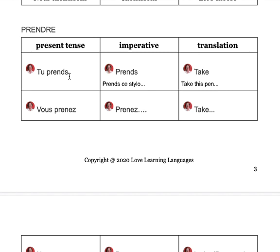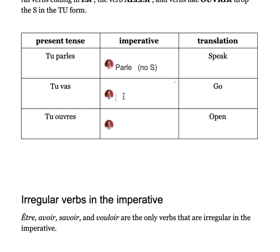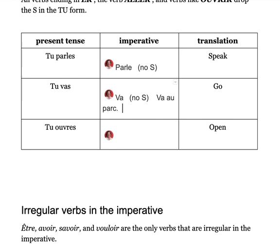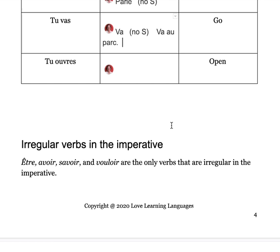The reason prendre keeps its S is because it's not an ER verb and it's not like ouvrir or aller. Now, tu vas — that's the verb aller — so in the imperative we just take tu off and get va, no S. So 'va au parc' — go to the park. And for ouvrir: tu ouvres becomes ouvre, without the S. You might say 'ouvre cette lettre' — open this letter.